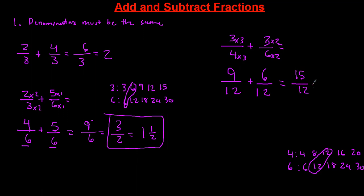And then the denominator is the same. Let's simplify. I could divide both of these by 3. 15 divided by 3 is going to be equal to 5. 12 divided by 3 is equal to 4, so we got 1 and 1/4 as our answer. So as you see, as long as the denominators are good then you're good. Make sure that the denominators are the same.